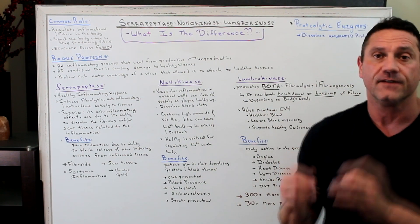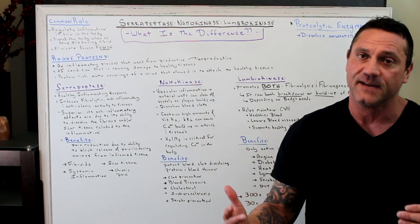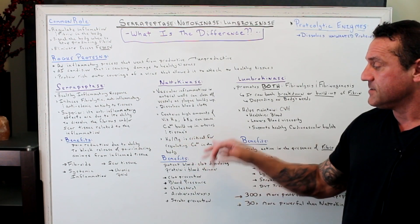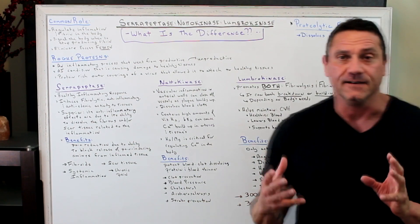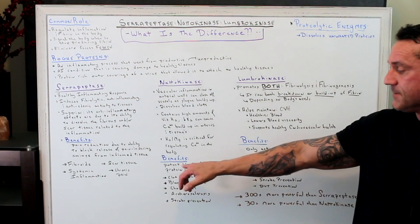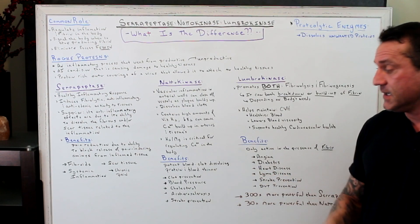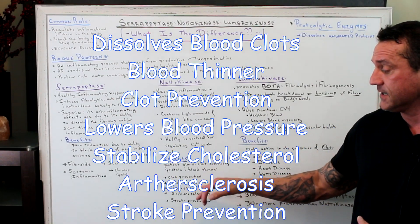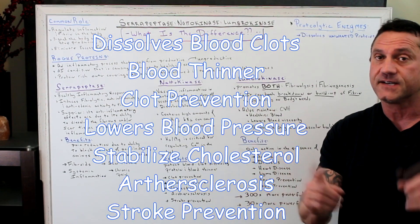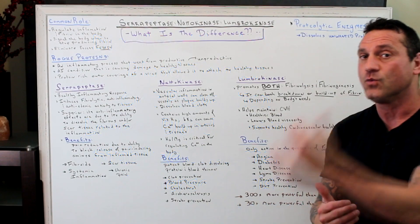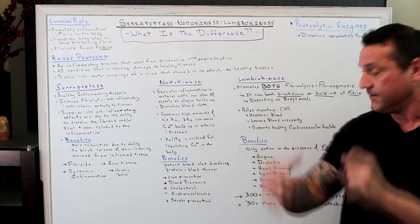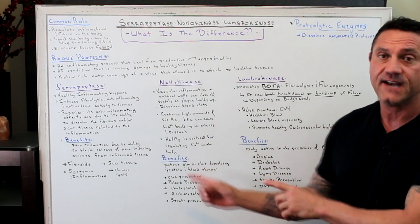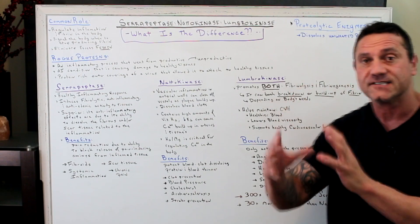Vitamin K2 and magnesium — and there are 10 different types of magnesium, so do your research on which one is needed — are critical for regulating calcium in the body. The benefits of nattokinase include being a potent blood-clot-dissolving protein and blood thinner. It's great for clot prevention, lowering blood pressure, and stabilizing cholesterol. Cholesterol acts as an arterial band-aid, so nattokinase is phenomenal for addressing atherosclerosis and stroke prevention.